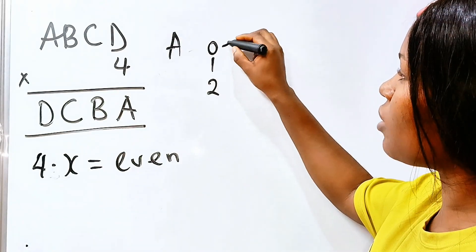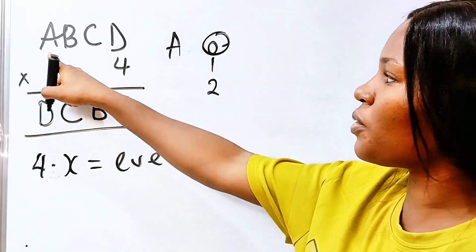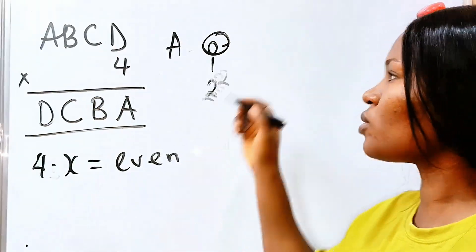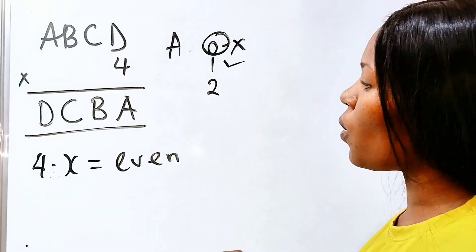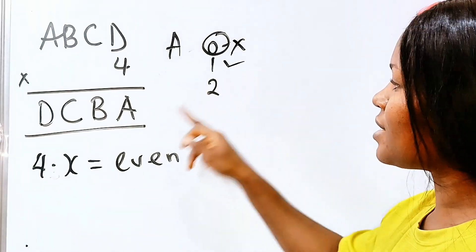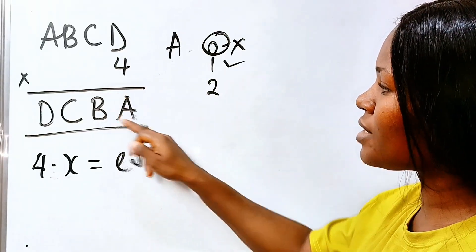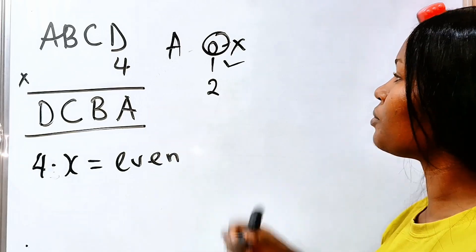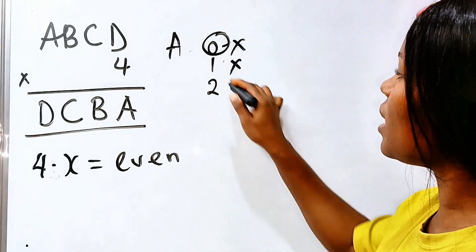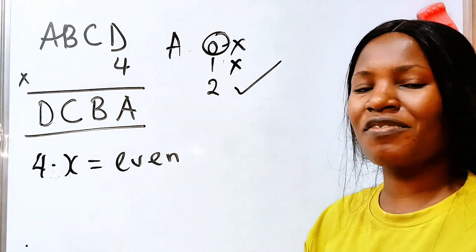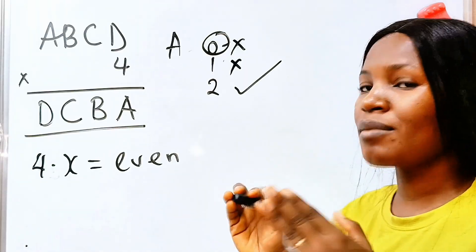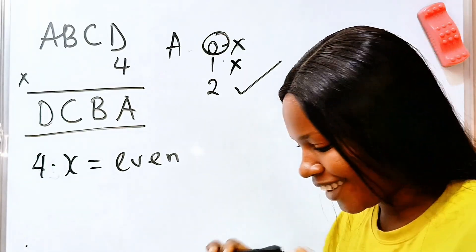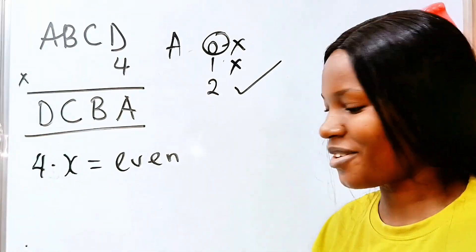So 4 times a number, 4 multiplied by X will always be even. No matter what. And number 1, A cannot be 0. If A is 0, then we're supposed to have three digits here. So that disqualifies this. A cannot be 1 because with that, A here will be 1 and the answer we got will be odd instead of even. So it is only 2 that satisfies this idea. So it simply means that A must be 2.